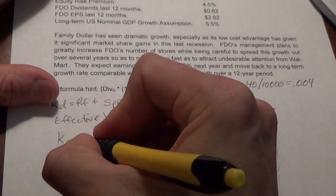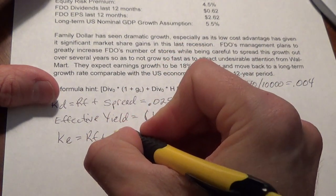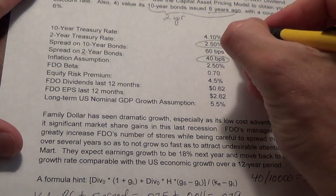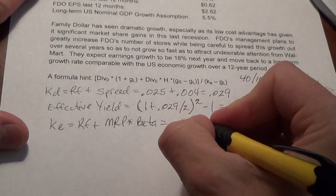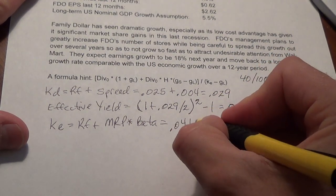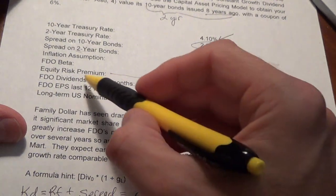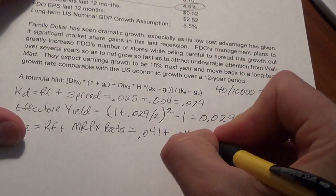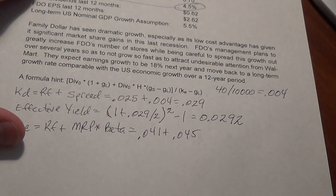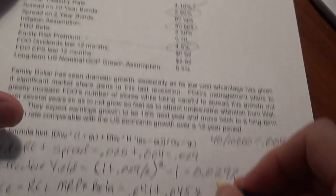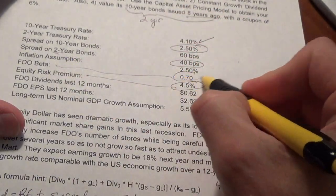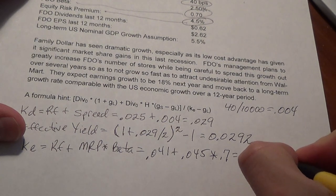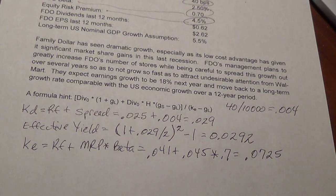For the stock, the discount rate is the risk-free rate plus the market risk premium times the beta. For stocks we use the 10-year treasury as the risk-free rate, so .041. We add the market risk premium — the same as the equity risk premium — of 4.5%, or .045. Then we multiply by Family Dollar's beta of .7, since it's a discount store its beta should be pretty low. That gives us a discount rate of .0725 for the stock.